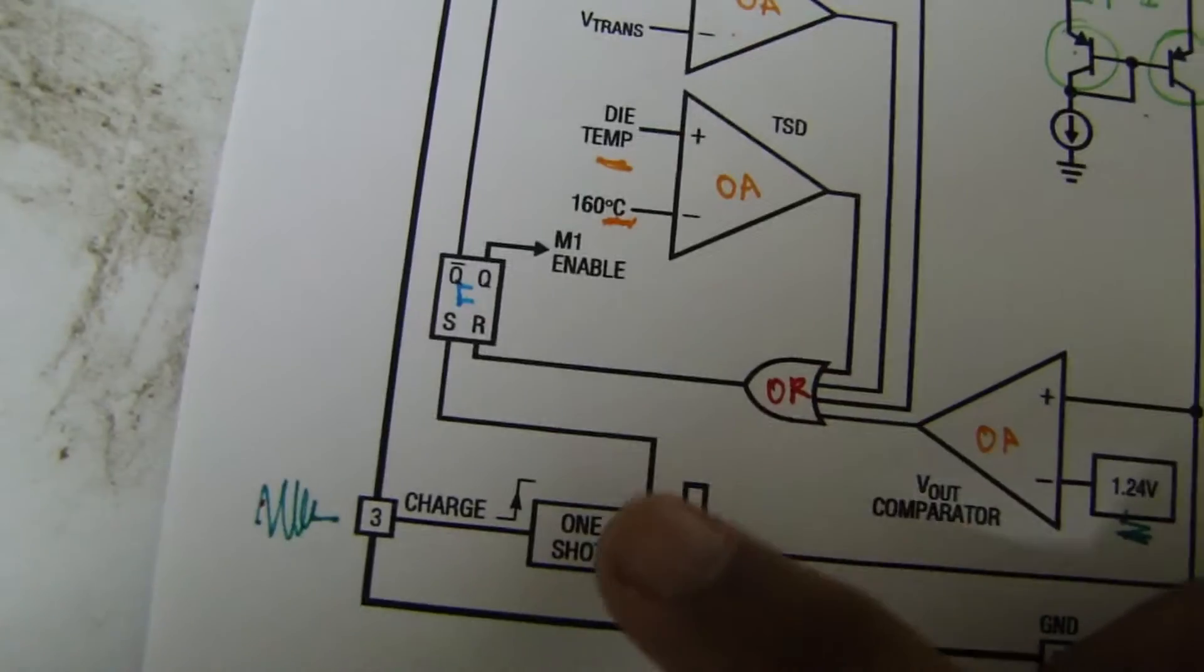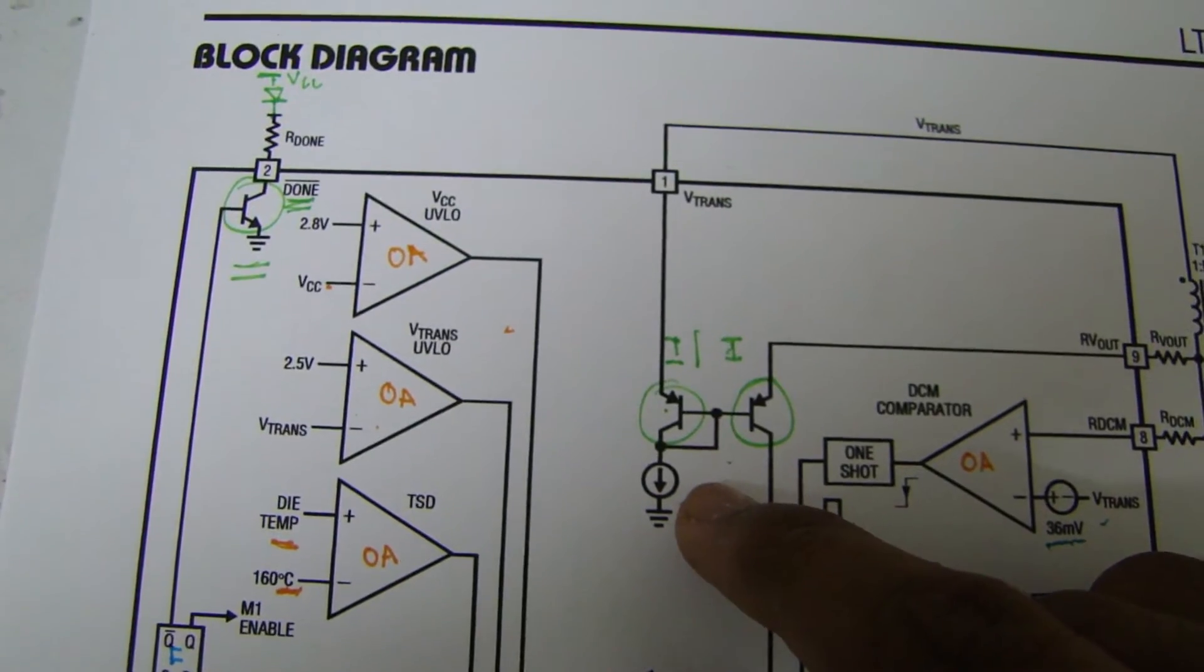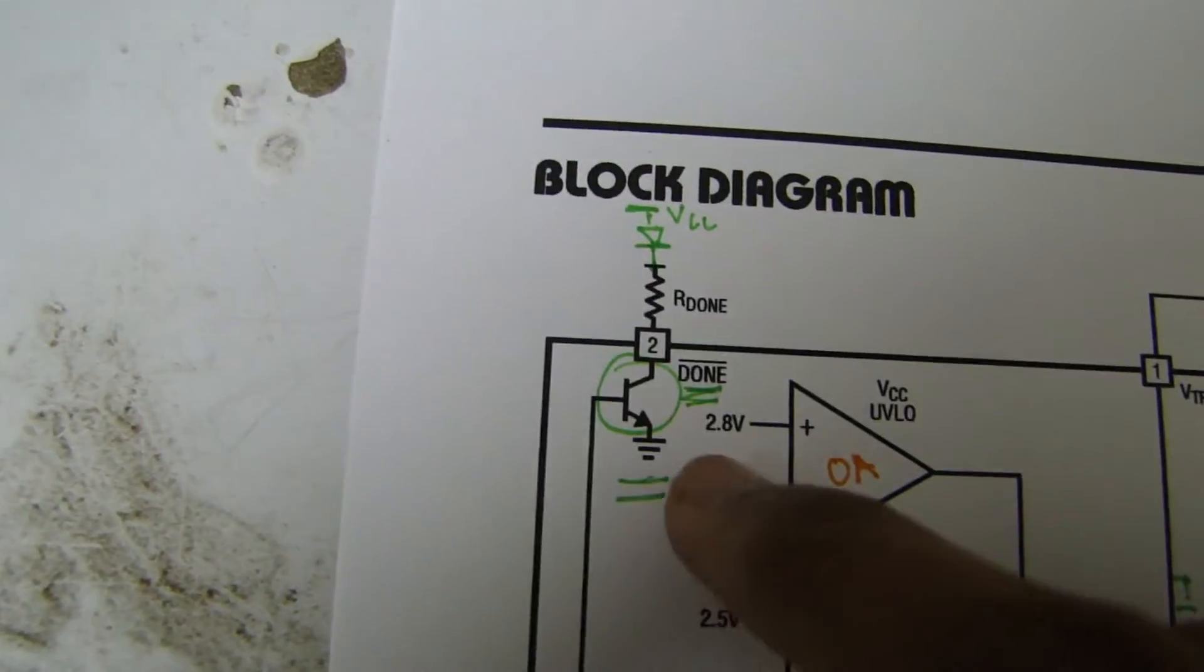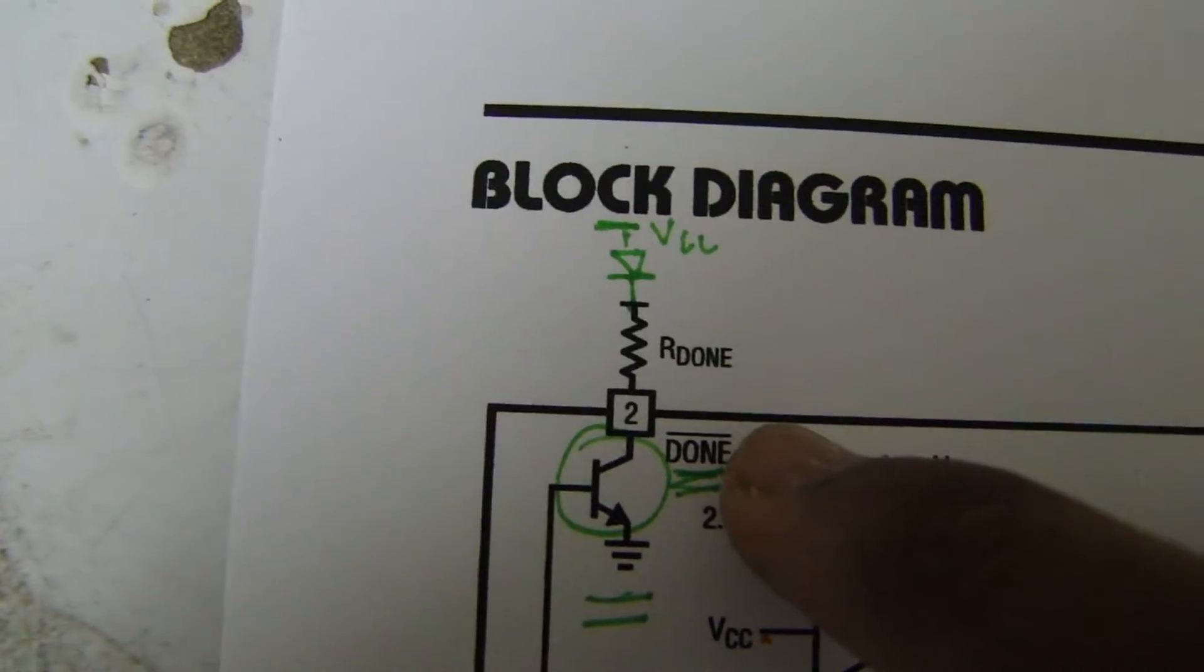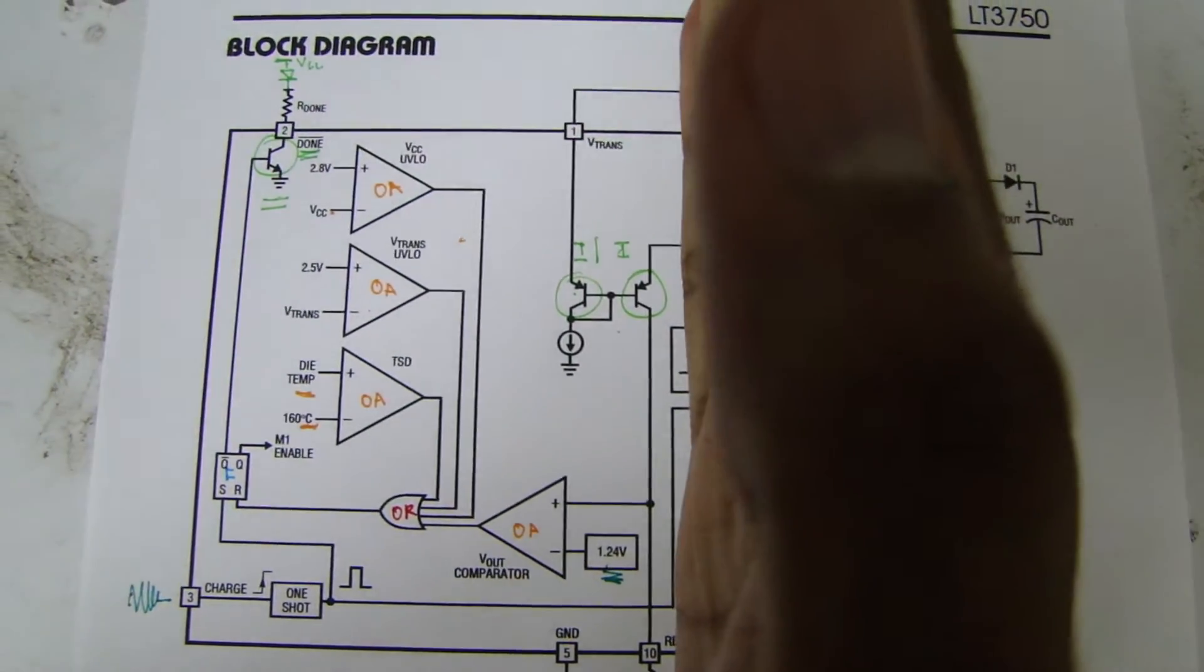Also depending on the state of this op-amp which measures the output voltage. It's connected to a current mirror. It gives an output on this pin. Done. So you could just add an LED to show the charging is done. So that's basically the control part of the circuit.